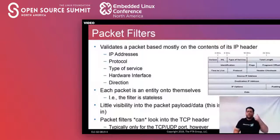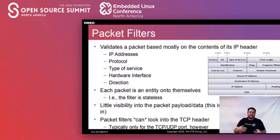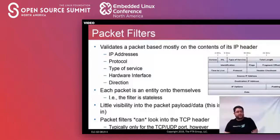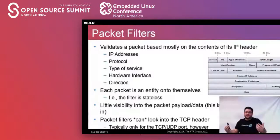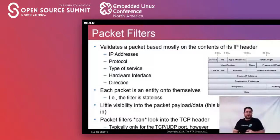The data portion is not the only thing transmitted in each chunk. There's an entire header section with useful pieces for filtering: an IP address (whether IPv4 or IPv6), a protocol defined in the header indicating whether it's TCP, UDP, or many other things — TCP and UDP being the most common. There's also type of service, the hardware interface it came from or is going to, and the direction the packet is going. The IP addresses (both source and destination) and the port being used are really what we care about from a filtering perspective.